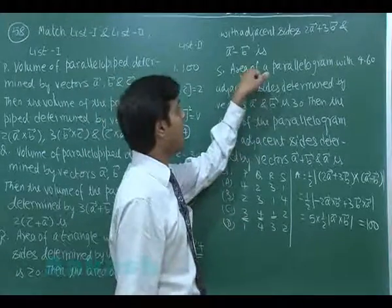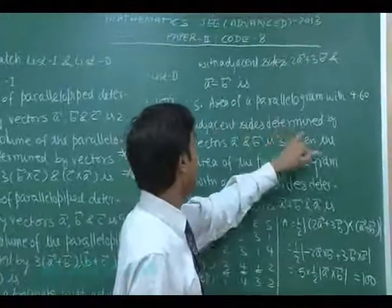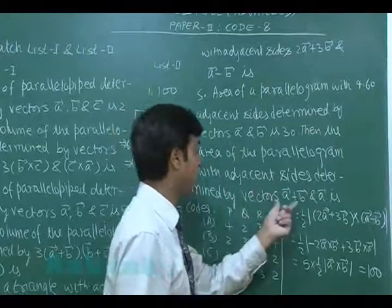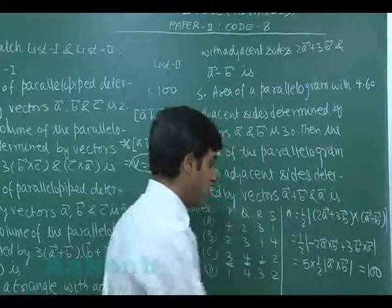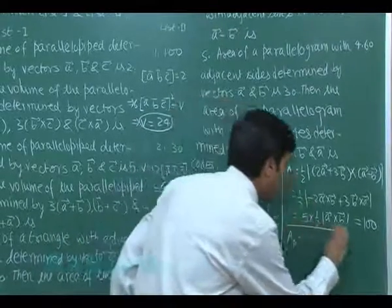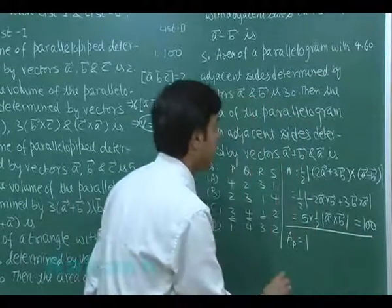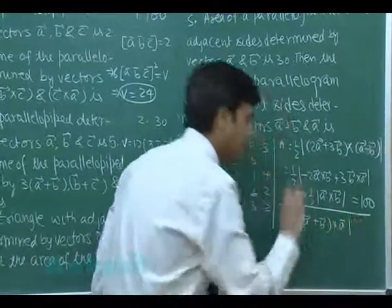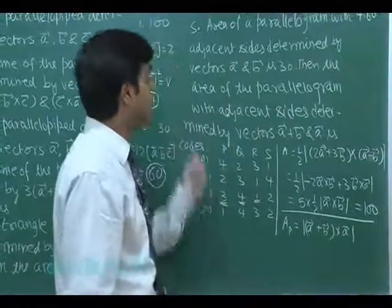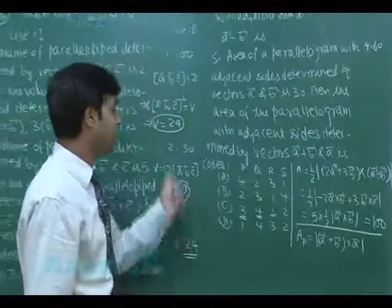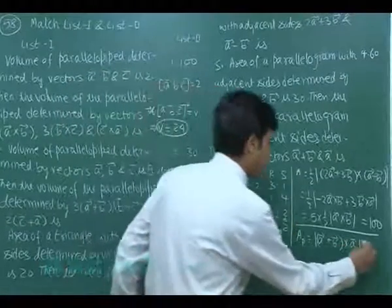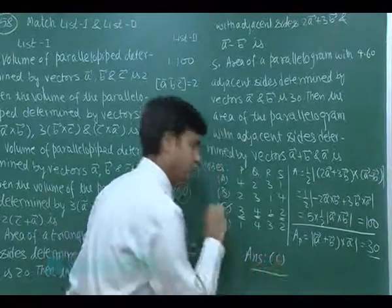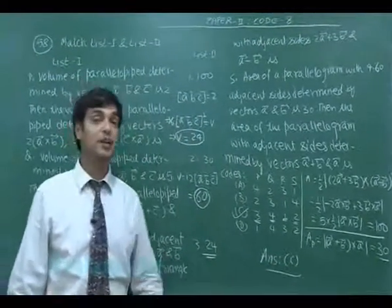Fourth: area of a parallelogram with adjacent sides a and b is 30. Find the area with adjacent sides a+b and a. The area = |(a+b) × a| = |a×a + b×a| = |0 − a×b| = |a×b|, which is the same as the given area, 30. So S matches to option 2. The correct answer is C. In this manner we complete the matching and move to the next question.